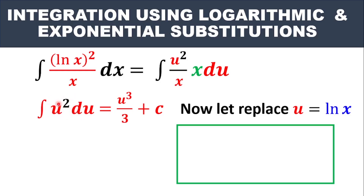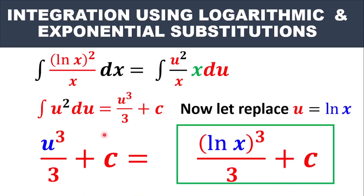When you integrate U², you add one to the exponent, so the integral of U² gives us U³ over 3 plus C. Plus C is a constant because this is an indefinite integral. But we have not finished yet — there was no U in the original question; the U stands for ln x. So we place back ln x wherever we see U, and the final answer is (ln x)³ over 3 plus C. That is the solution for the first example.